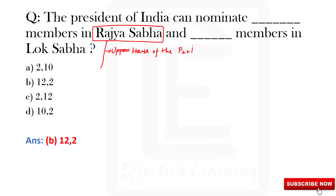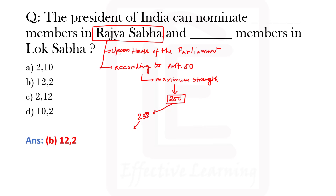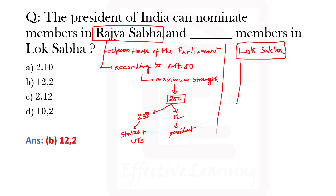Some additional information about the Rajya Sabha: the Rajya Sabha is the upper house of the Parliament. According to Article 80, the maximum strength of the Rajya Sabha is 250 members — 238 members from states and union territories, and 12 members must be nominated by the President of India.